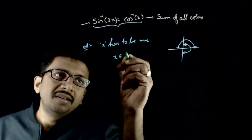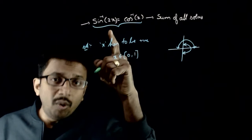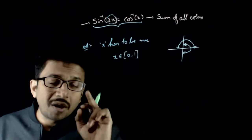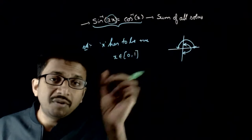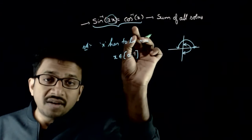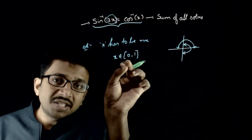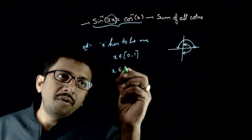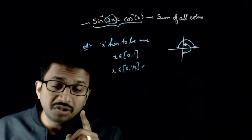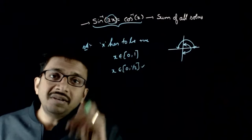So x should lie between 0 and 1. But 2x is going inside sine inverse, and whatever number goes inside sine inverse must be between 0 and 1. If x equals 1, cos inverse 1 is defined but sine inverse 2 is not. So for both to be defined, x has to be smaller — x should belong to 0 to one-half. All solutions must lie in this interval.